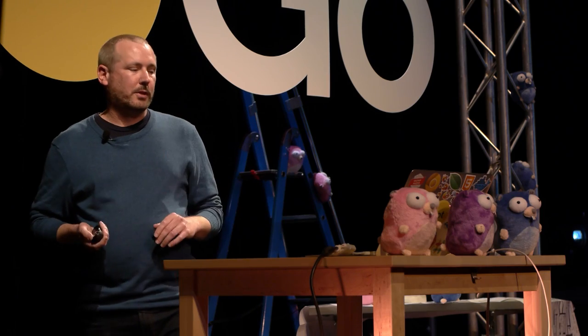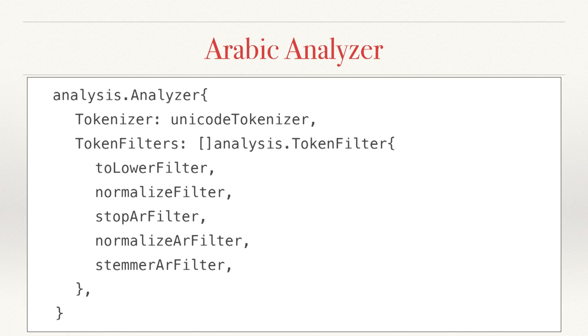The final important piece is what we call the analyzer — and this is not an interface, this is a structure. It composes a single tokenizer and then zero or more token filters in a way that provides the functionality of taking a slice of bytes and producing a token stream as the final result. Looking at what the actual Arabic analyzer looks like: the tokenizer is the Unicode tokenizer, a standard shared one we're reusing. Then we have five token filters — the first two are shared ones that put things in lowercase and normalize Unicode characters. But the last three are specific to Arabic: Arabic stop word removal, normalize Arabic characters, and finally perform stemming on the Arabic words themselves.